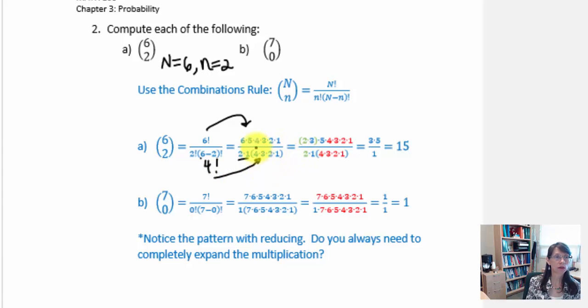Now do you notice that we do have some duplicate factors? That means we can do some reducing. Because all of our terms in the numerator are connected with multiplication and all of the terms in the denominator are also connected with multiplication.